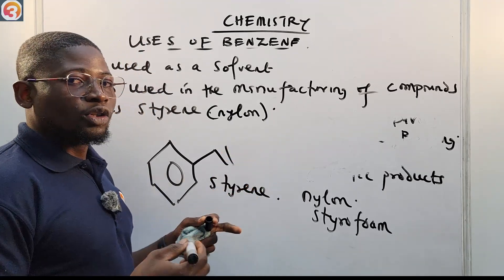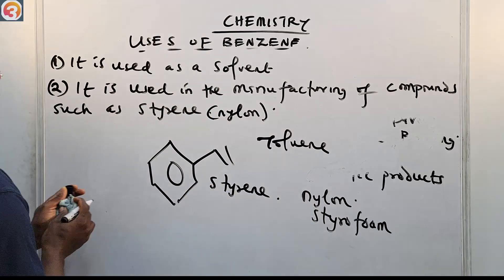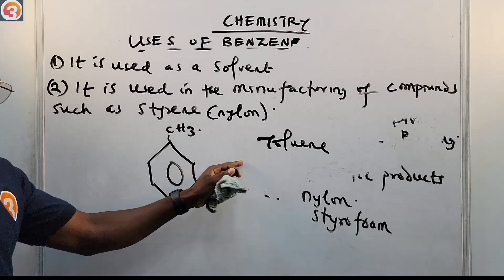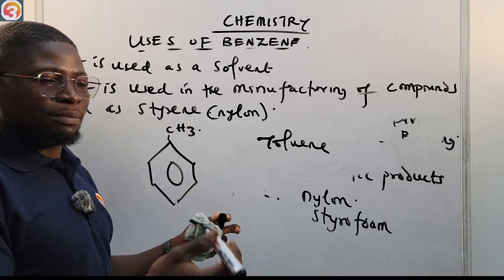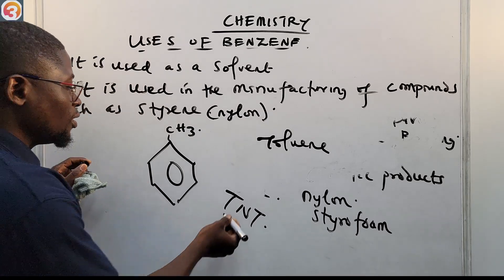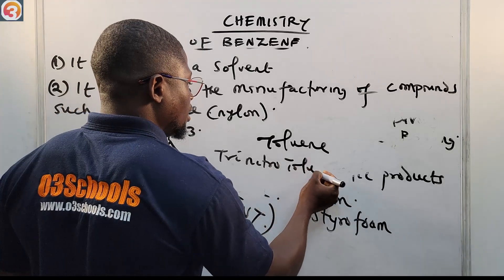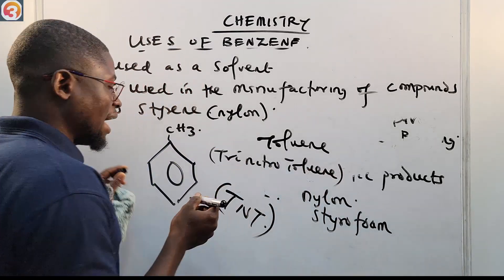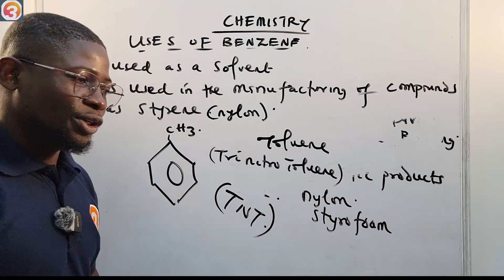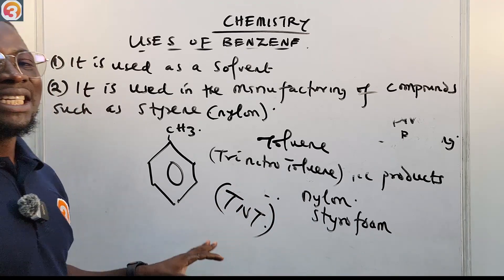Benzene is also used in the manufacture of toluene. Toluene is a benzene ring with a methyl group attached. Toluene is used in the manufacture of an explosive called TNT — trinitrotoluene. You may see it in your past questions. Please don't bomb anybody!